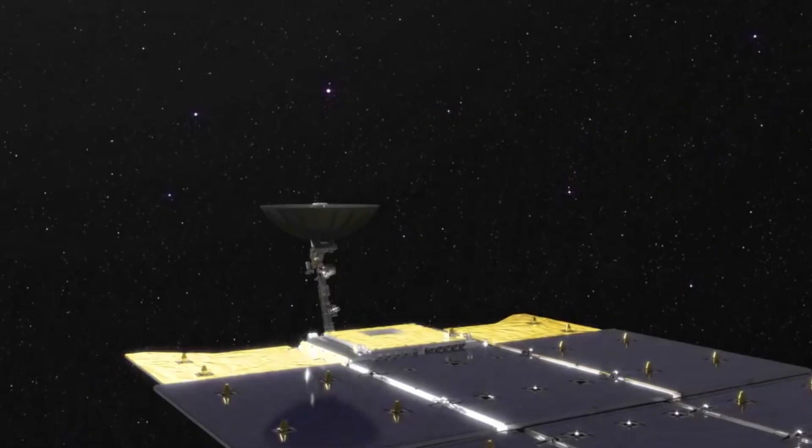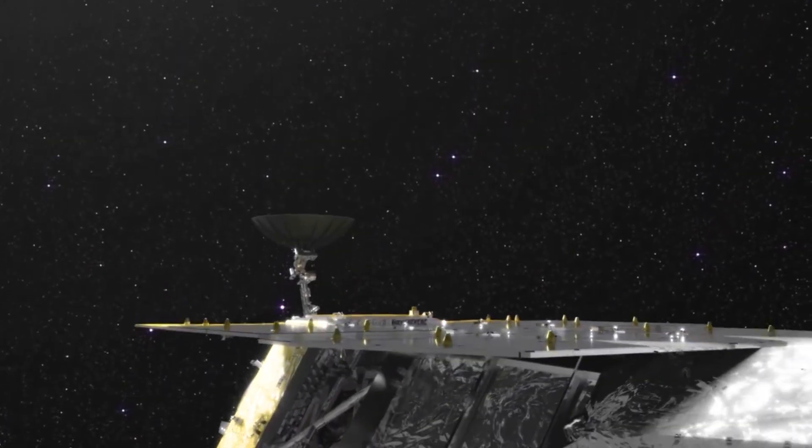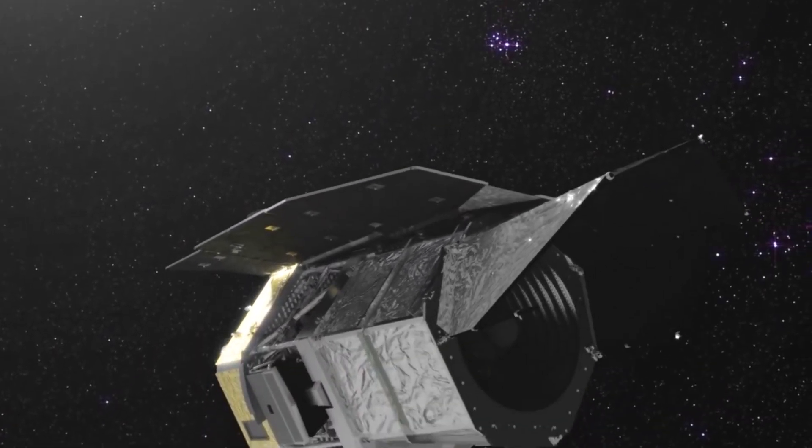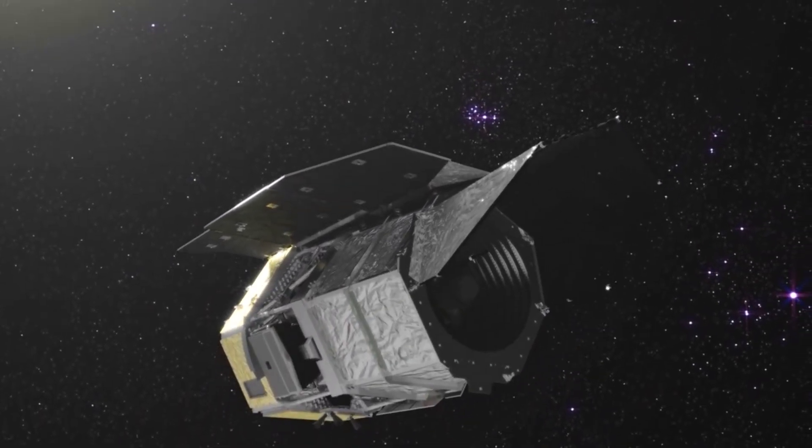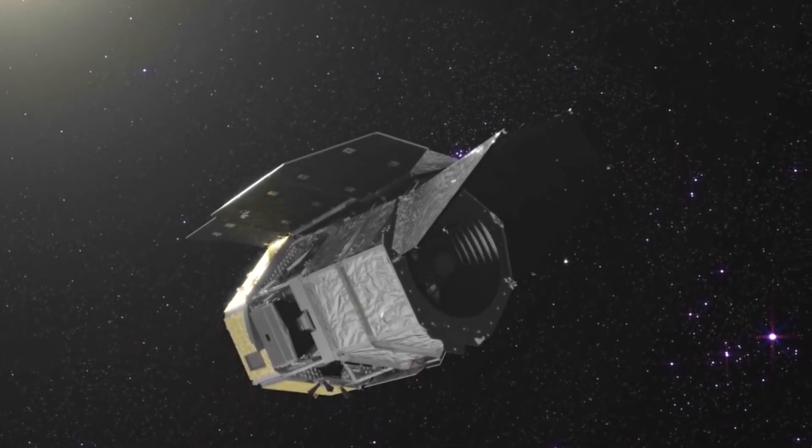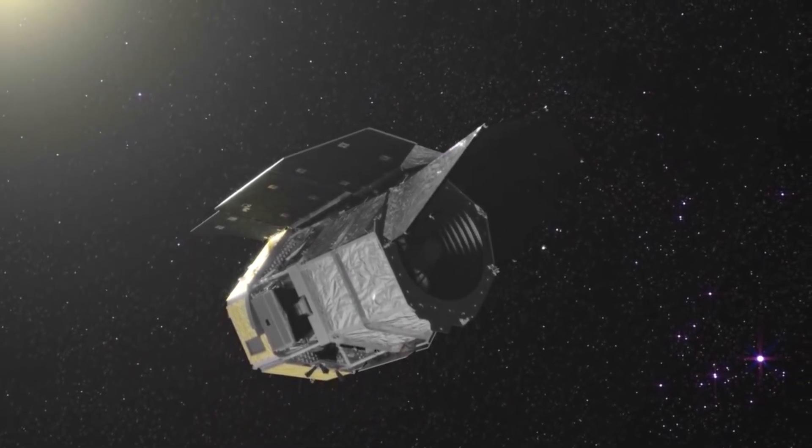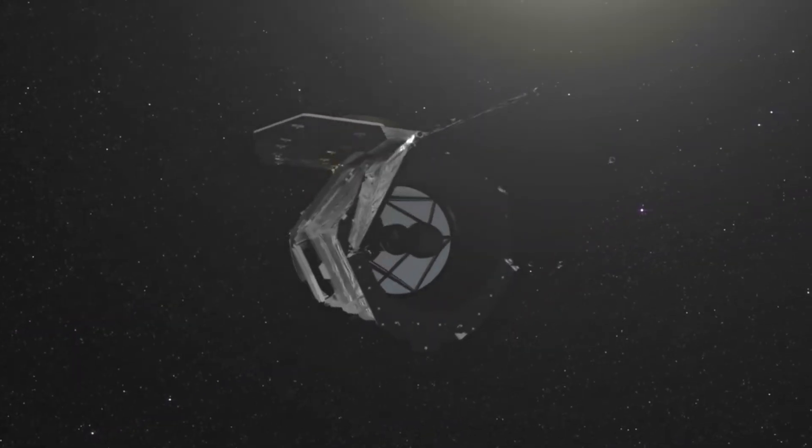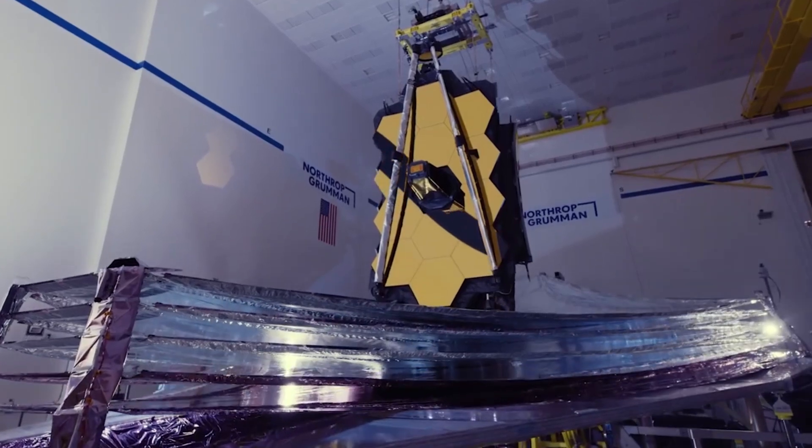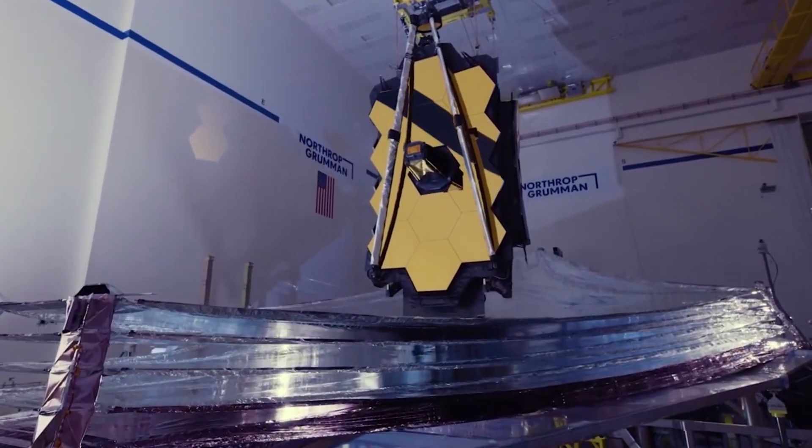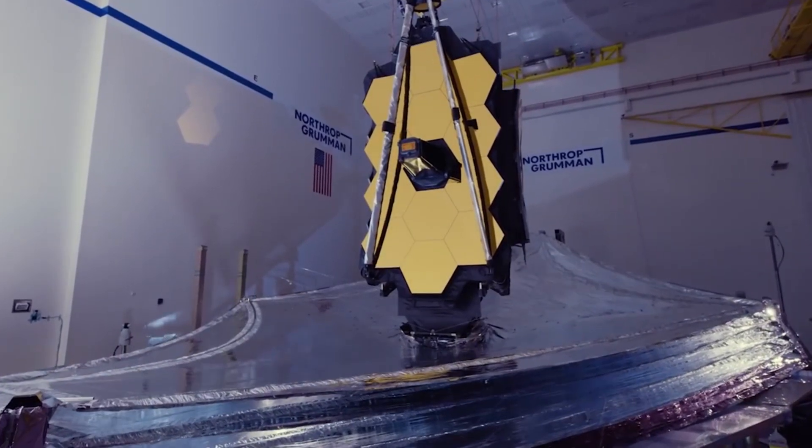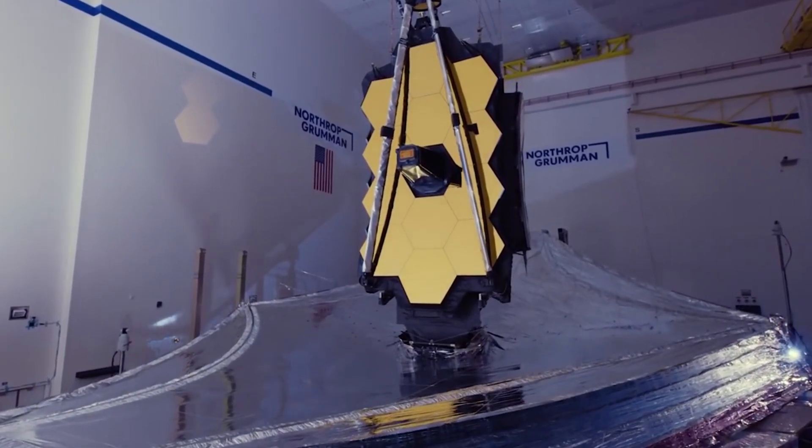The telescope was launched from French Guyana on Christmas. A week and a half later, a sunshield as big as a tennis court stretched open on the telescope. The instrument's gold-coated primary layer, 21 feet across, unfolded a few days later. The primary mirror has 18 hexagonal segments, each the size of a coffee table, that will have to be painstakingly aligned so that they can see as one. A task that will take three months.